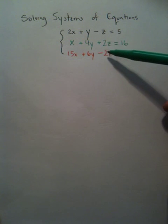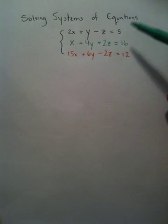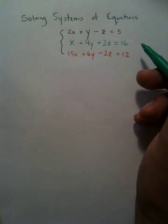By looking at this, you could say I could get rid of z very easily between these two functions, because there's a positive 2z and a negative 2z. So you say, let's pick the colors green and red.